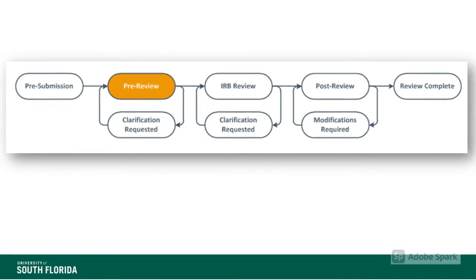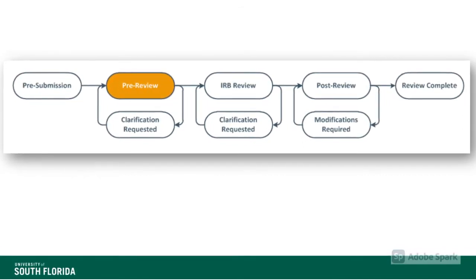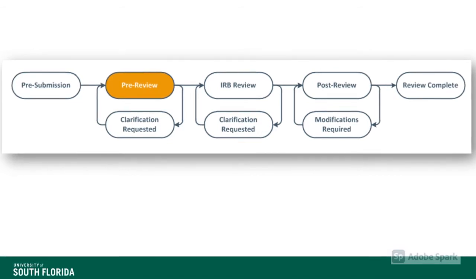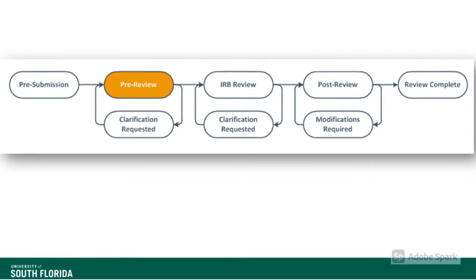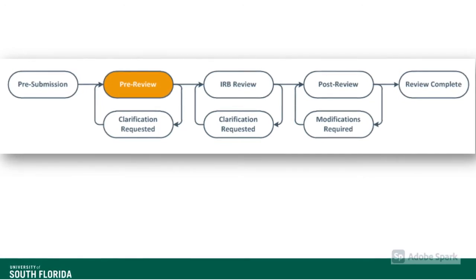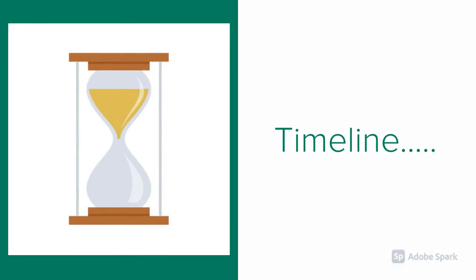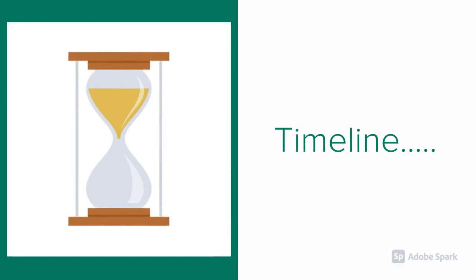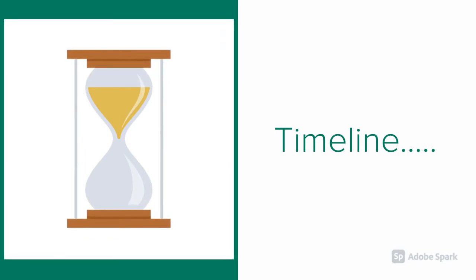In the pre-review phase, your study is assigned a research compliance administrator, or RCA. They're going to do a pre-review of your study to ensure your application is complete and accurate. The timeline of this phase depends on the RCA's current workload, but typically, once your application has been assigned to an RCA, the usual timeframe to review and provide you with initial comments and clarification requests is about three to four days.